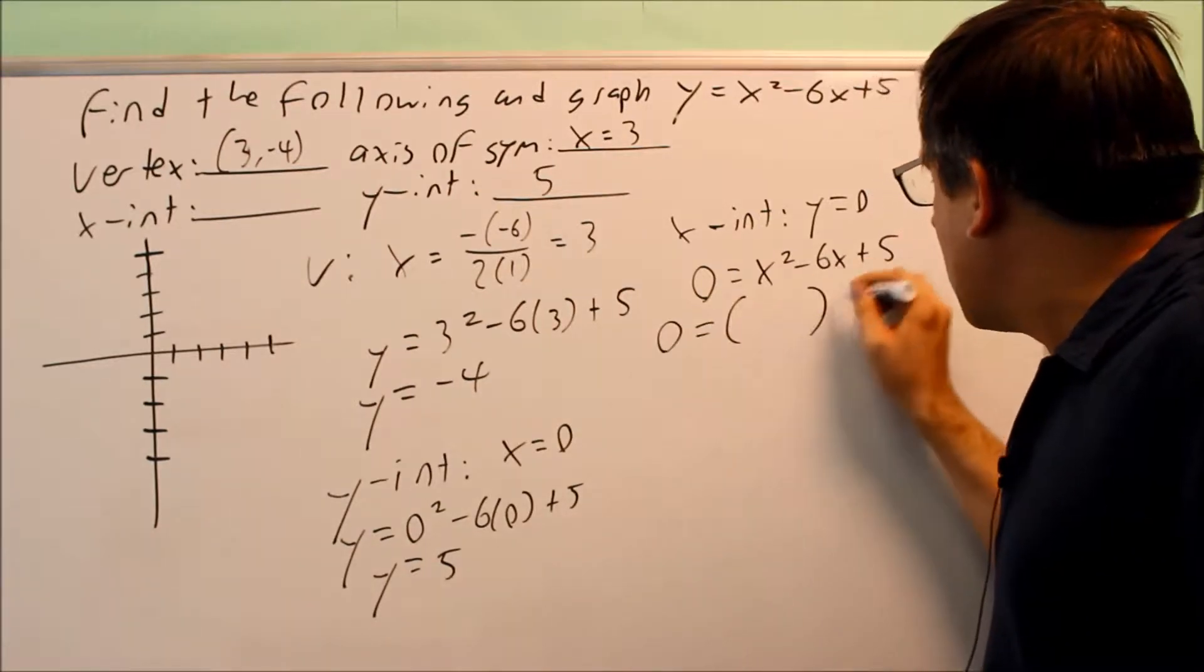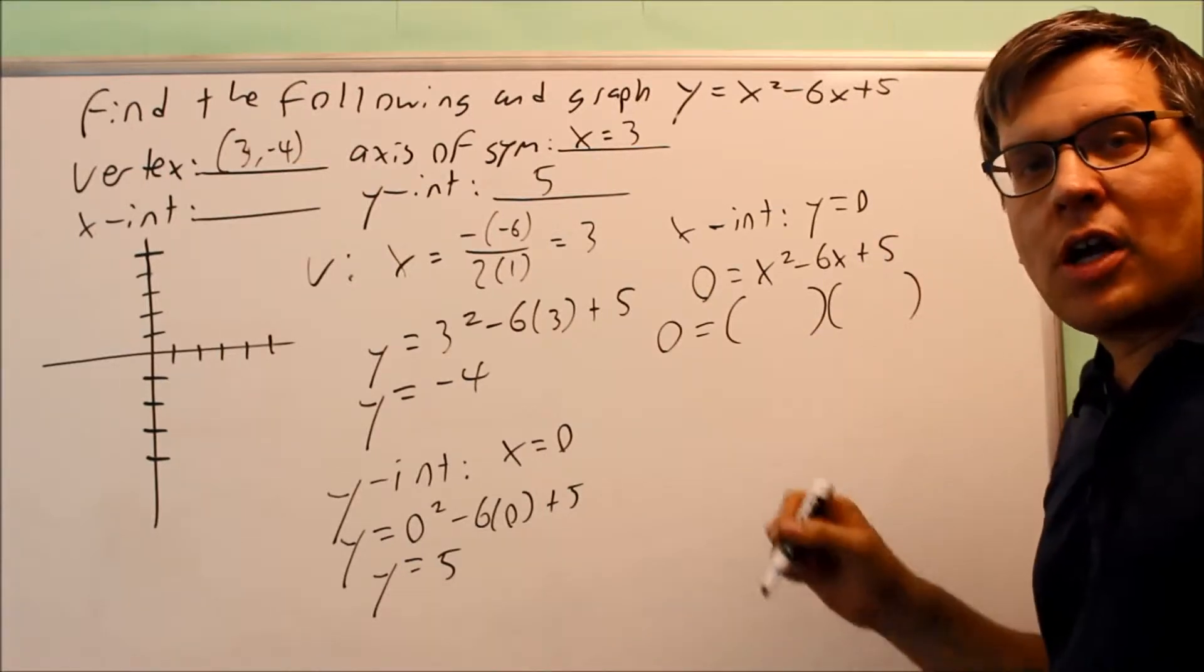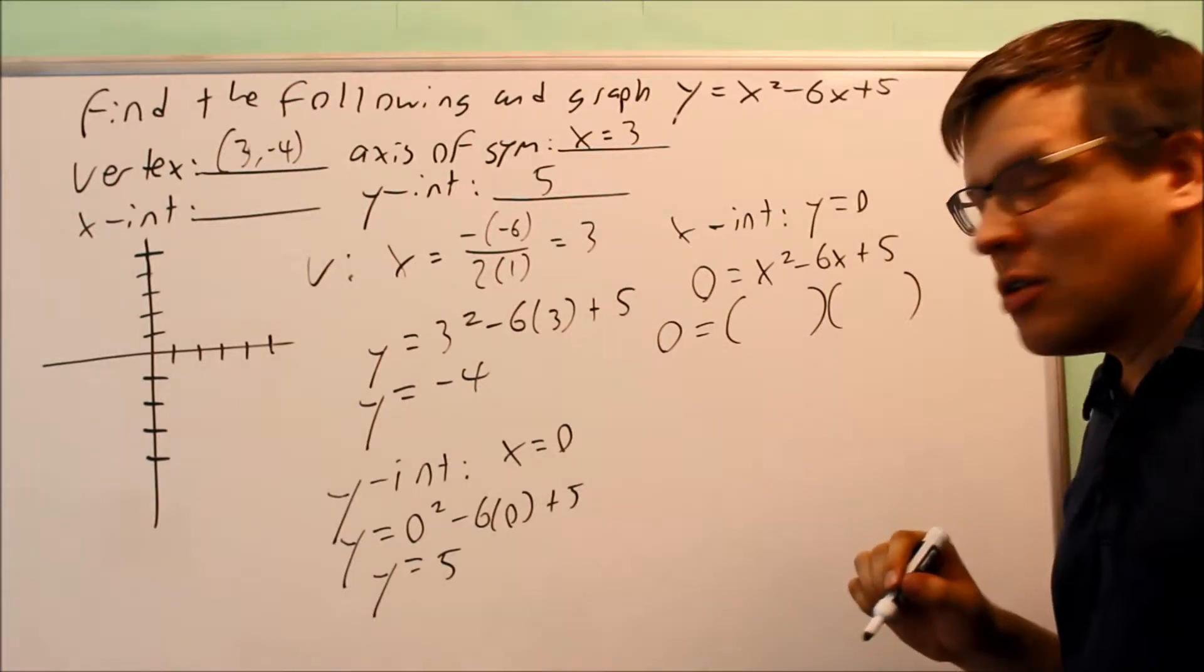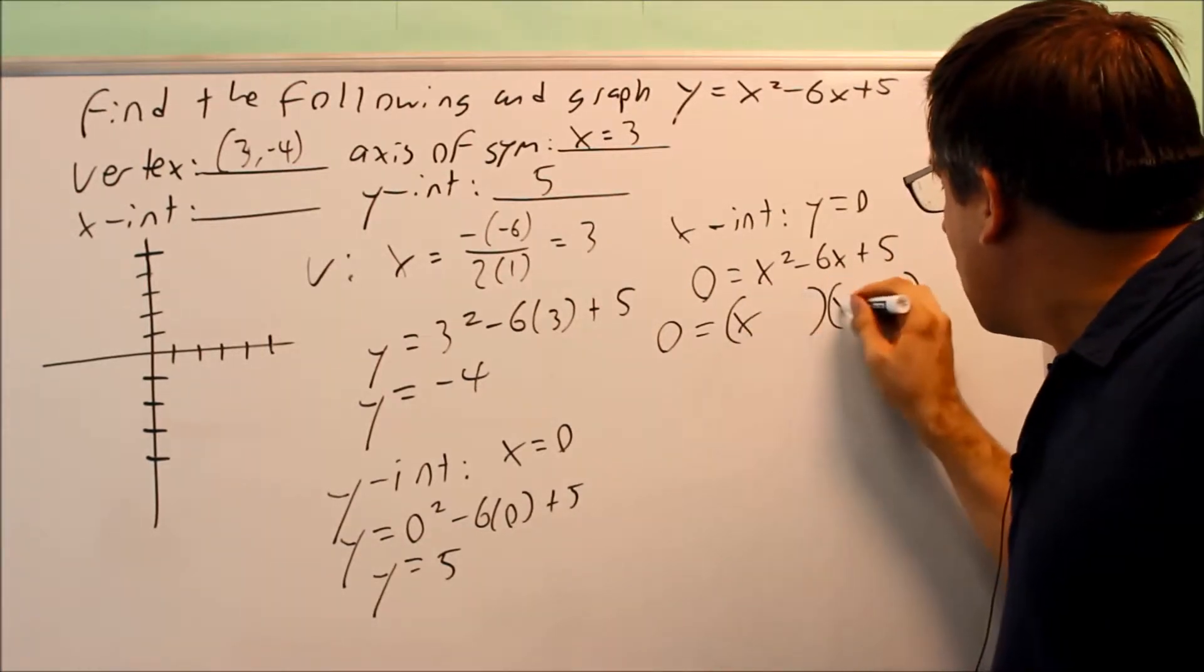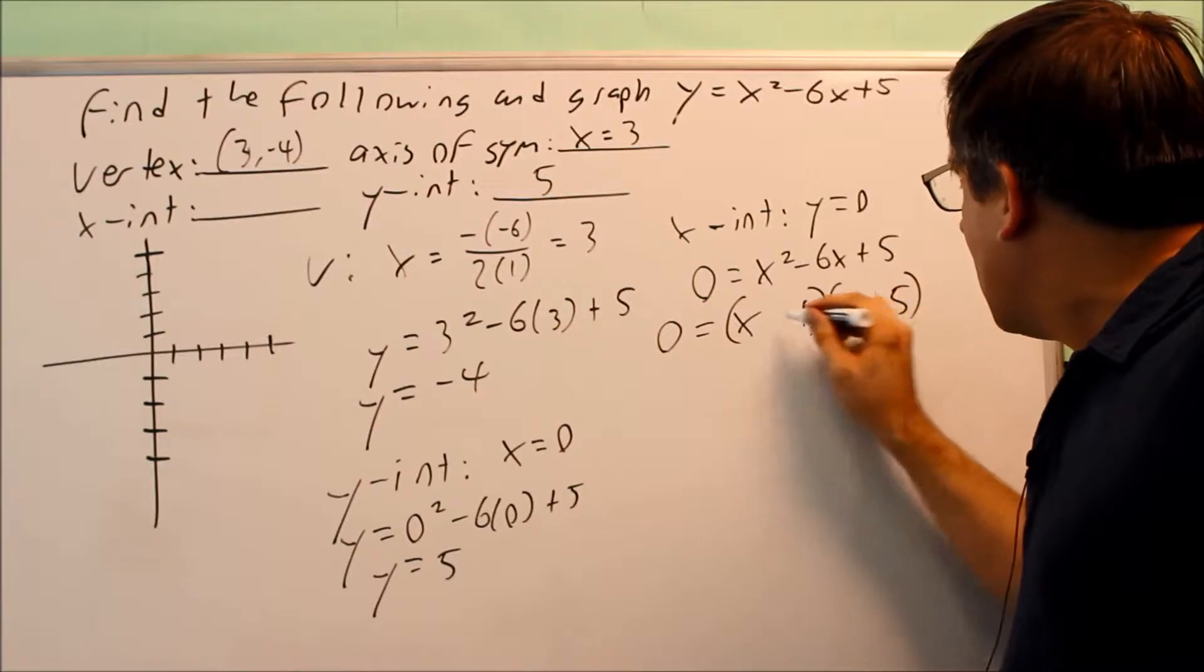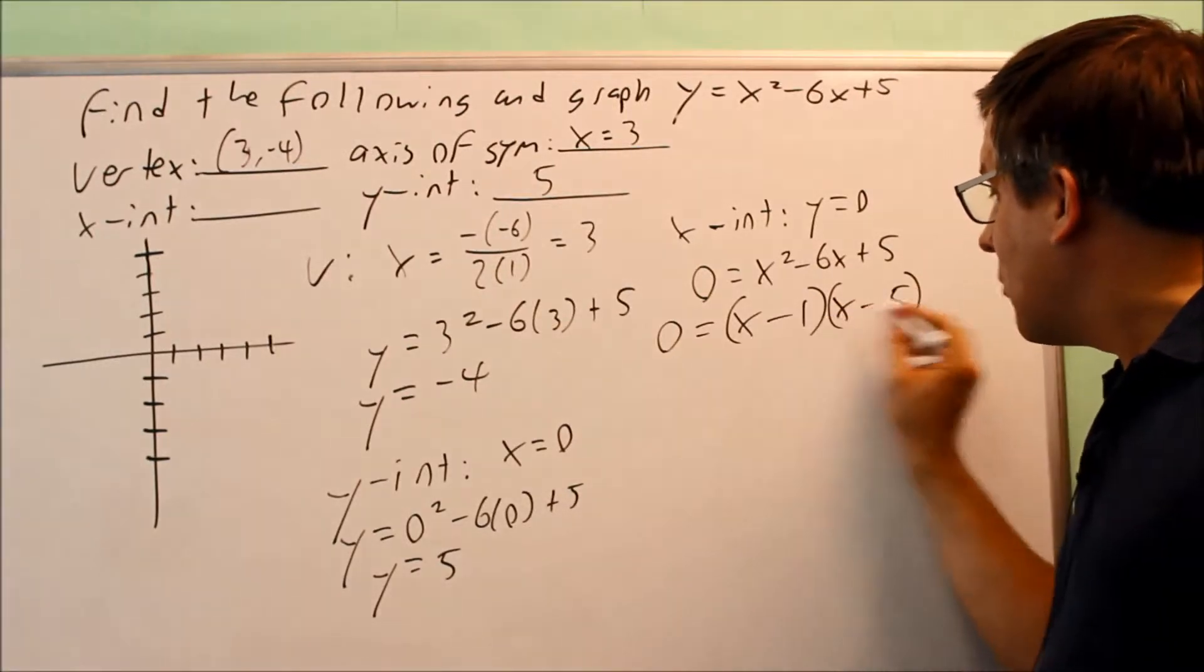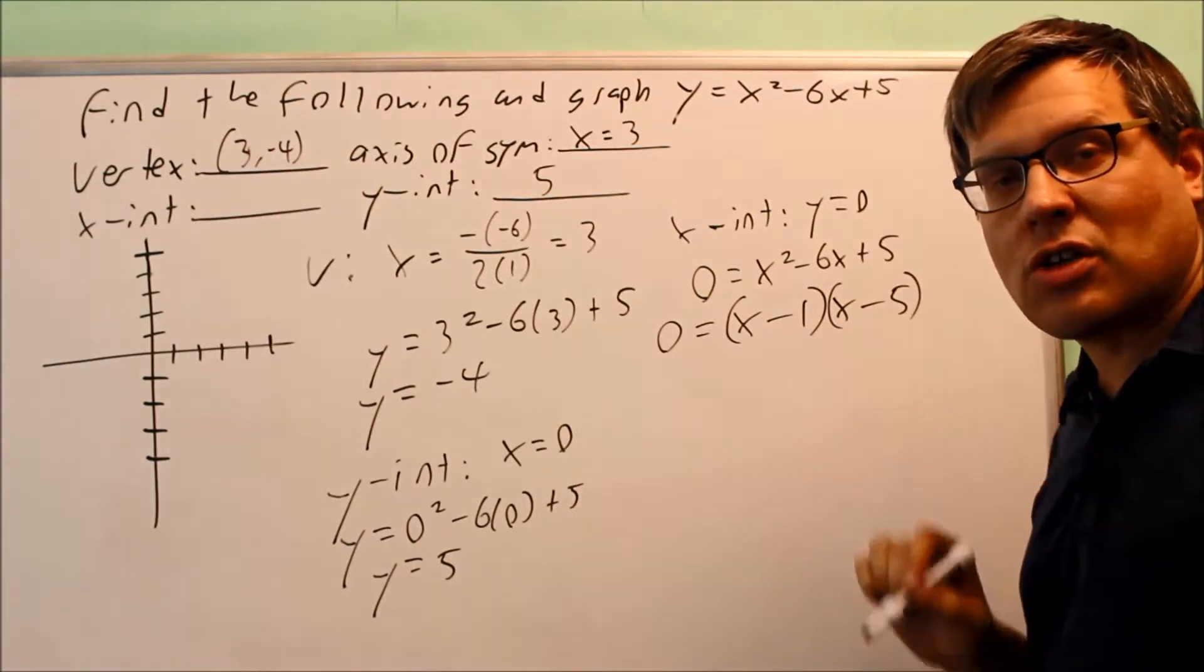So this one we are able to factor. You look for what numbers multiply to make positive 5, but then add to be negative 6. So the answer to that, you're going to have 1 and 5, and both of those you want to have negative, because negative 1 times negative 5 is positive 5. If you add them together, that's where you get the negative 6 from.